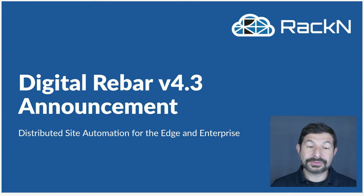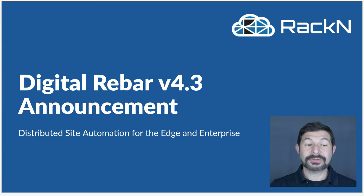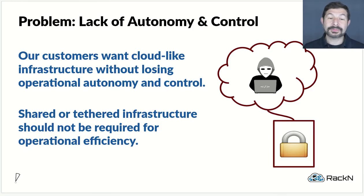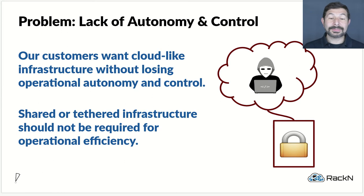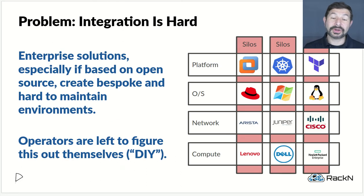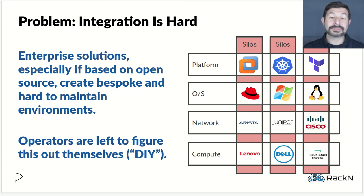That is really what brought us to the capabilities of the 4.3 release — we've taken all of these single site capabilities and turned them into distributed site automation. But first, let's talk about what customers are looking for from a data center automation platform. They're concerned that they don't have the autonomy and control to actually run their infrastructure. They're being forced to make a choice: if you want the type of API-driven, cloud-like experience, you have to give up control by moving to the cloud, or accept tethered infrastructure that lacks the autonomy and operational controls necessary for truly autonomous operations. And the reason this is, is because integration is really hard. There are a lot of vendors with a lot of different platforms that are all individually excellent but don't integrate well, leaving every operator having to build their own automation and control planes, which at the physical layer is really problematic and frankly wasteful.